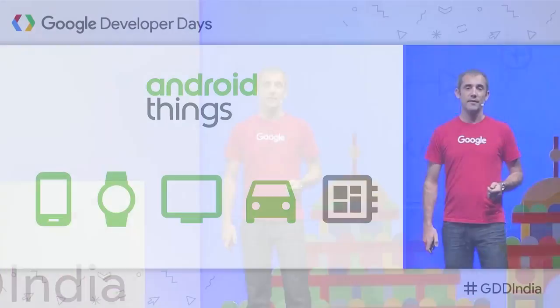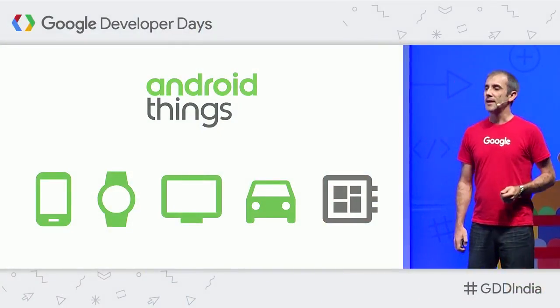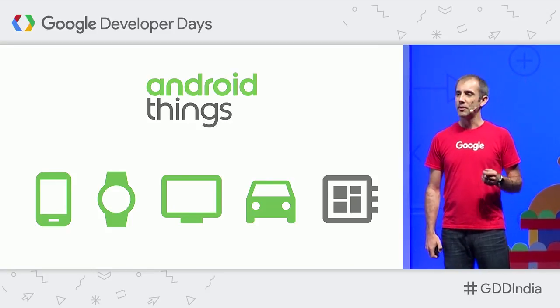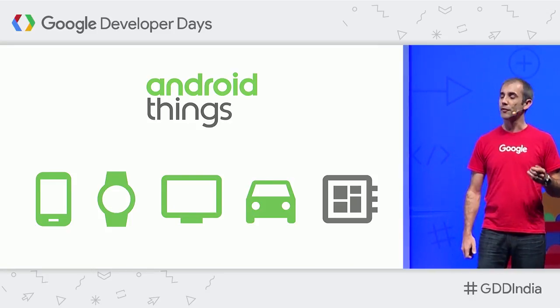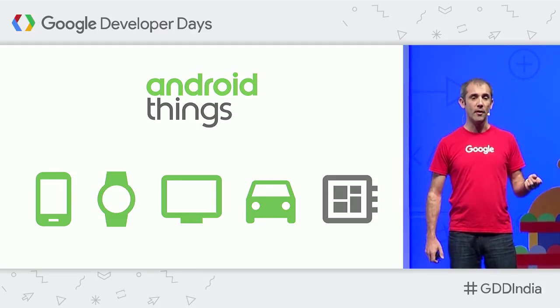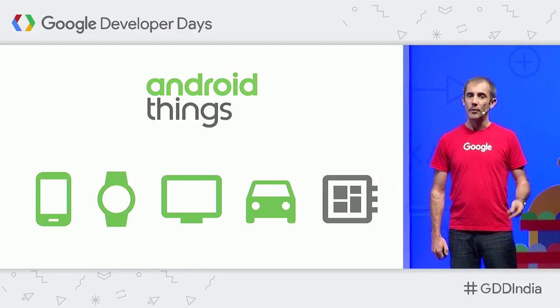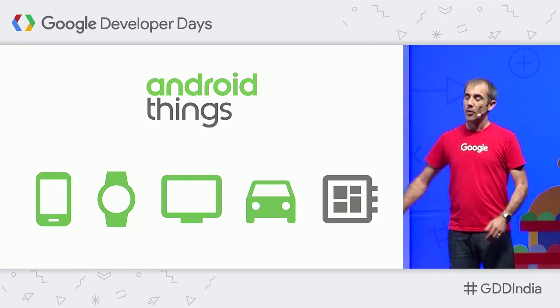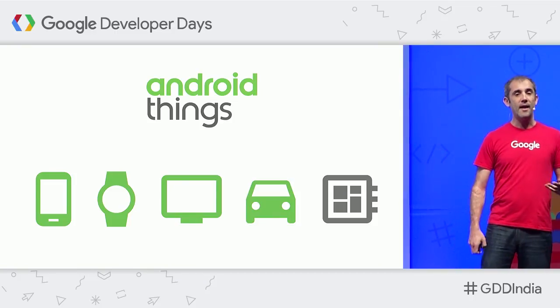So what is Android Things? Android Things is an extension of the Android platform that allows you to build IoT devices. Many of you are familiar with Android on phones, Android on tablets, we have Android Wear devices, Android in cars, and now we have Android for building IoT devices. It's nice because you've already got your existing developer experience — many of you in the room are already Android developers, so you can take advantage of your existing software stack.